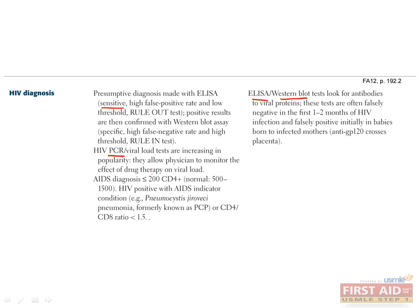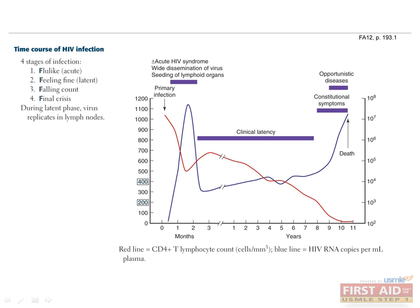The CD4 T cell count is also assessed to monitor treatment progress. When CD4 count dips below 200, the diagnosis of AIDS is given. AIDS diagnosis may also be given for HIV patients who develop an AIDS-defining infection or who have a CD4 to CD8 ratio less than 1.5. During the primary infection, or acute HIV syndrome, patients experience mono-like symptoms four to eight weeks after initial infection, including fever, generalized lymphadenopathy, malaise, headache, and myalgia.